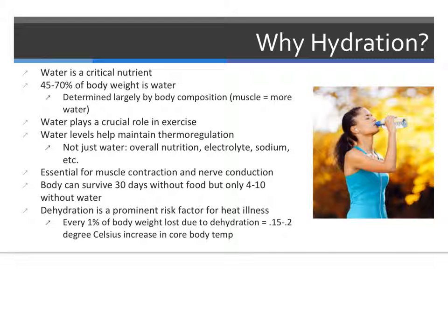The human body is made up of between 45 and 75 percent water by weight. The percentage of water makeup is determined largely by body composition. Muscle contains 75 percent water, while fatty tissue is comprised of just 20 percent water. Therefore, the more muscle tissue present compared to fat, the more water.